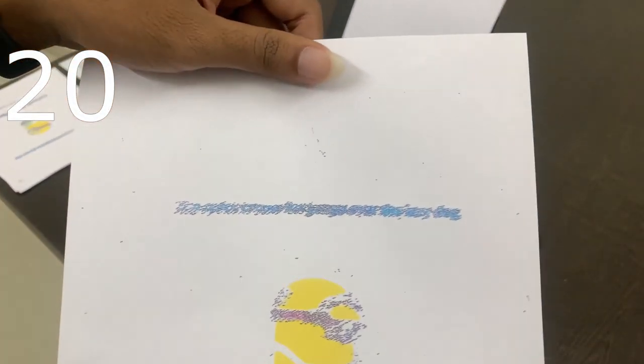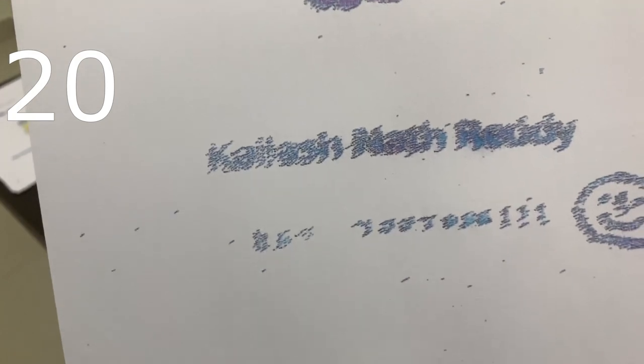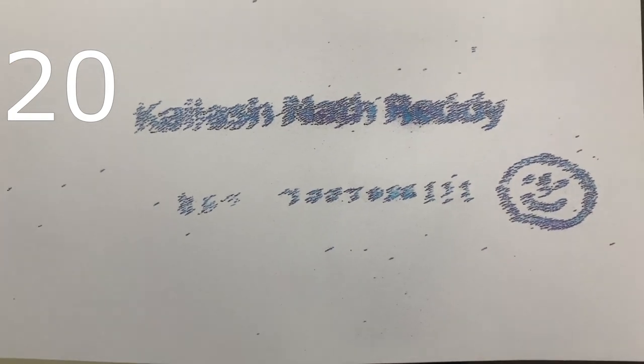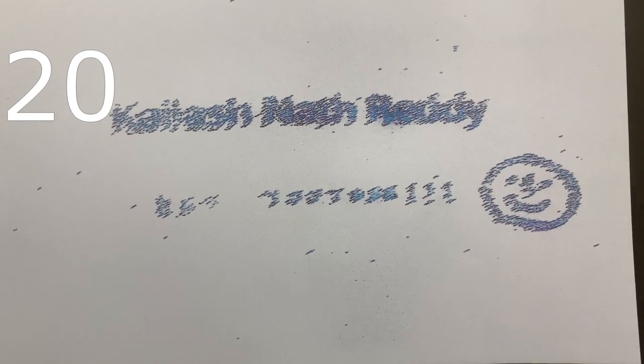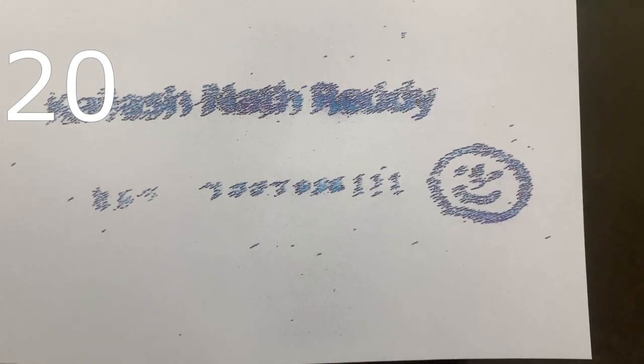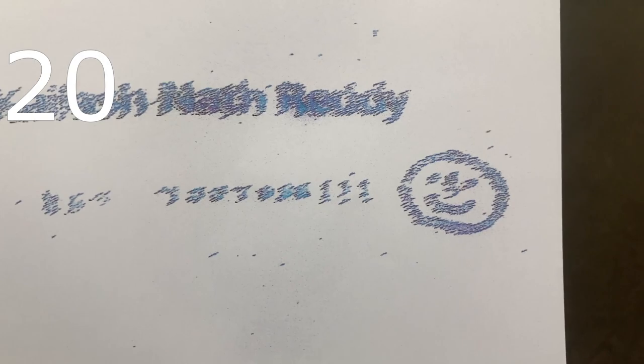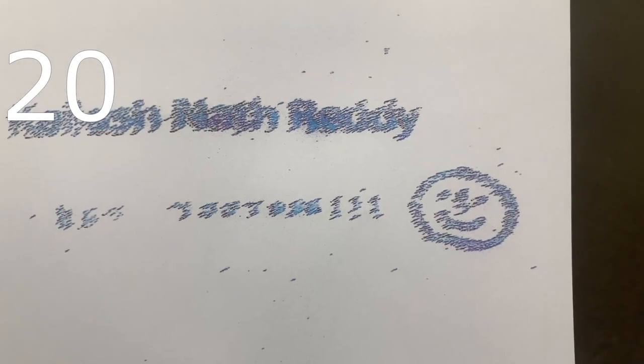This is after the 20th copy. As you can see, the text is barely readable, and the image has lost its blue color and structure. My name is completely not readable. The handwritten thing doesn't look like something written anymore — at least the smiley is still somewhat visible.